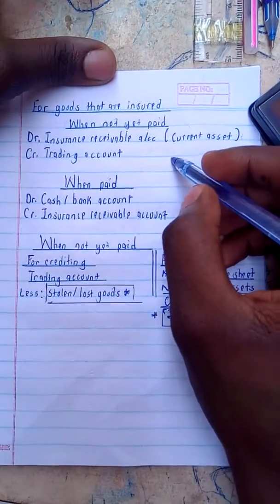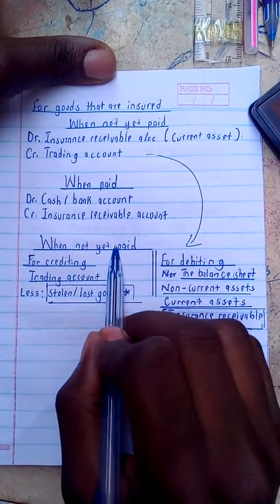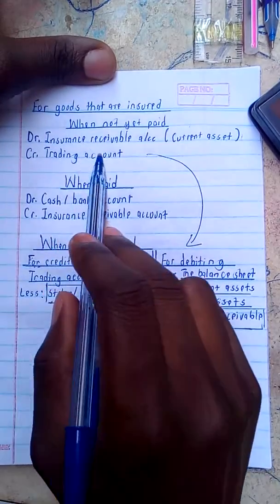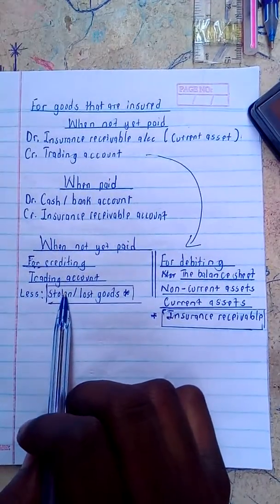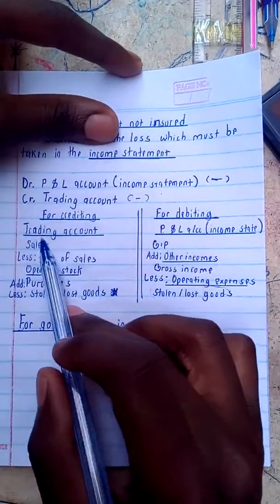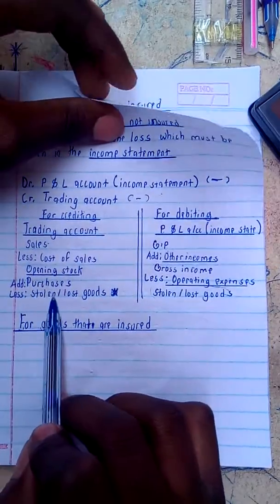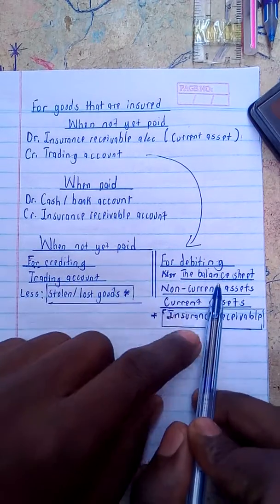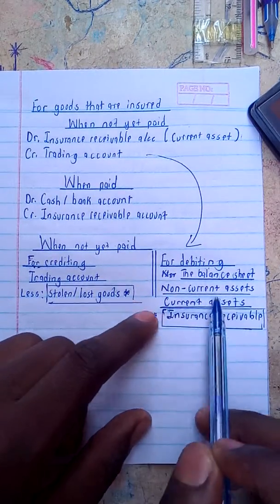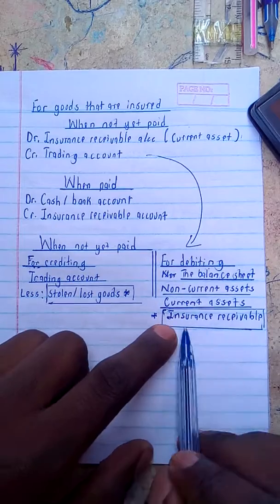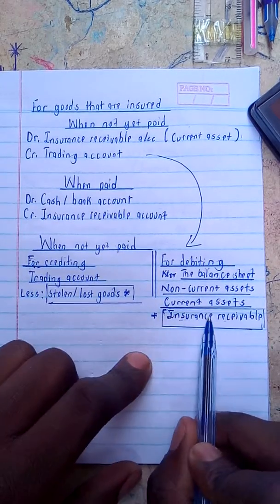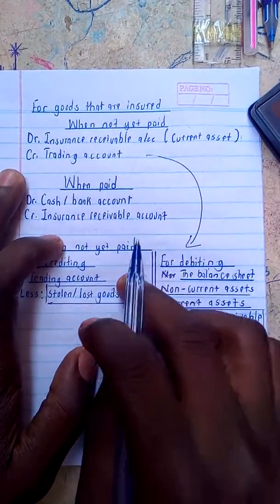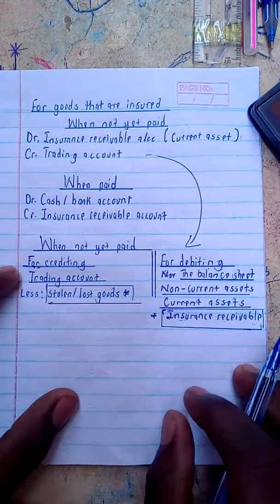When not yet paid, you credit the trading account — listing the stolen or lost goods on that side as I've indicated here. On the debit side, in the balance sheet under current assets, you bring in your insurance receivable. That is how you treat goods insured and goods not insured in single and complete records.